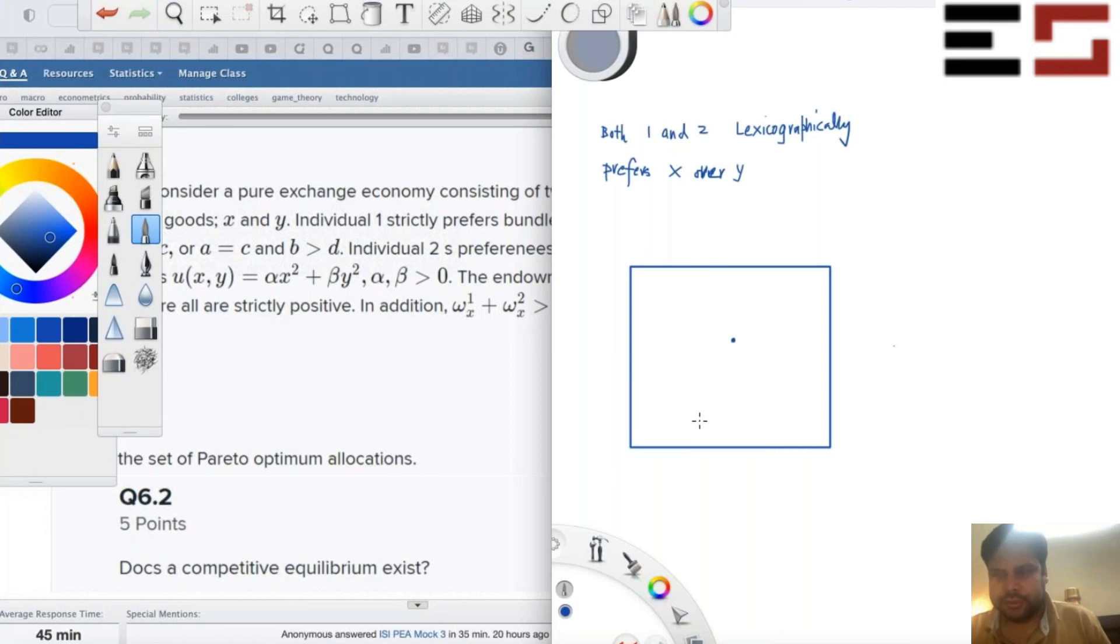Just take this one point. Where can you make one better off? You can make one better off if you move to this region. Right? If you move in this blue region, you can make one better off, including this boundary and not including this boundary.